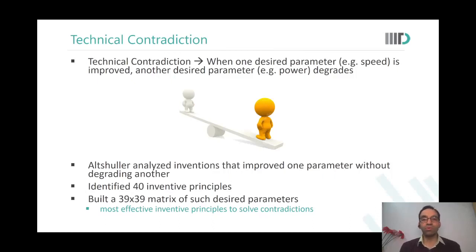These parameters which are directly relevant to us and to our customers, we're directly talking about them. So no further tweaking is required. All that we need to do is Altshuler also made a 39 by 39 matrix.